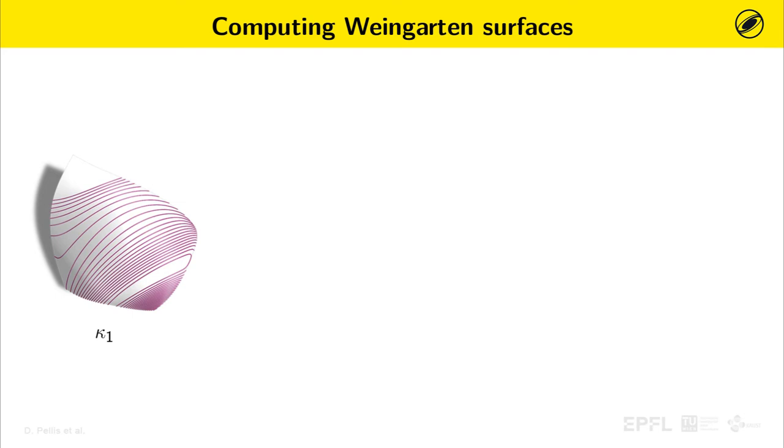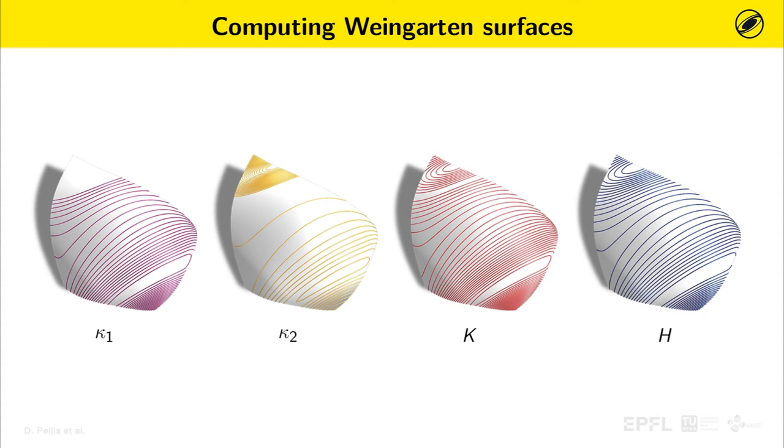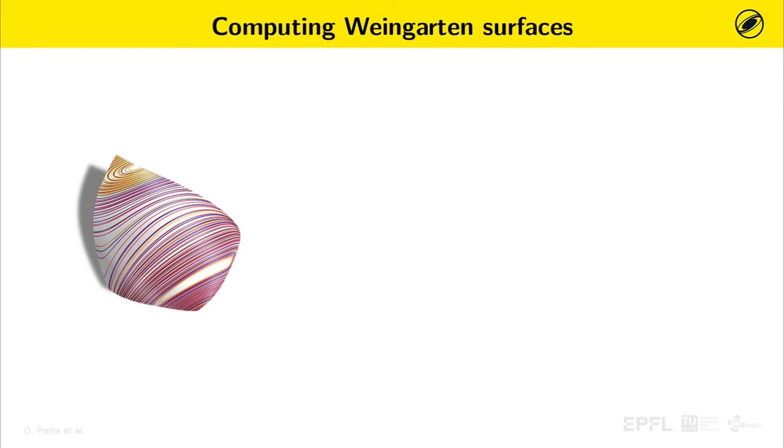To compute generic Weingarten surfaces, we first observed that for these surfaces, the isolines along which are constant the principal curvature k1, the principal curvature k2, the Gaussian curvature K, and the mean curvature H, run all parallel to each other.